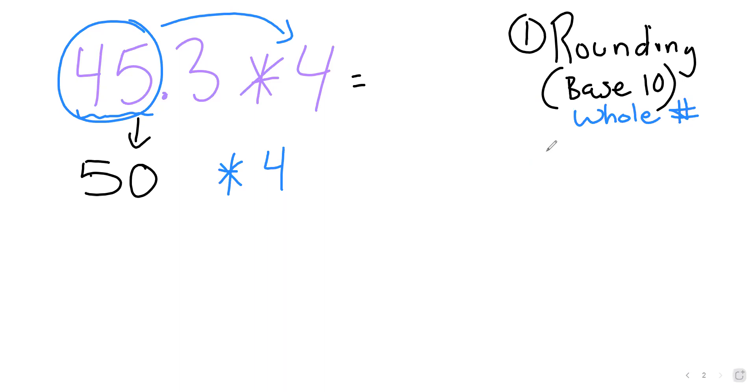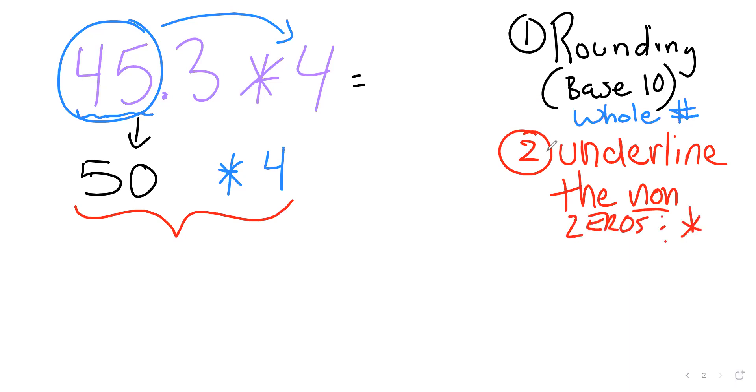Next, if you look here, we have one of those base 10 multiplication problems that we've done before. That's where we can underline the non-zeros and multiply.